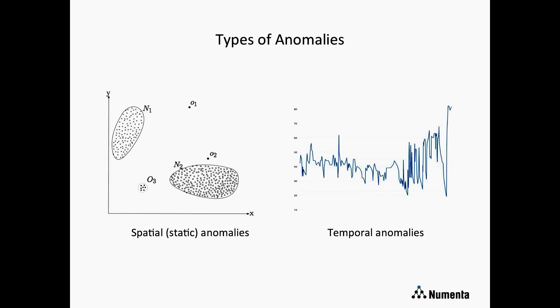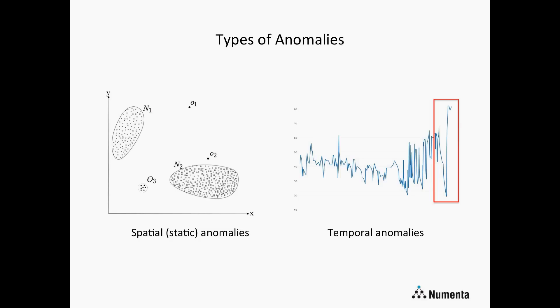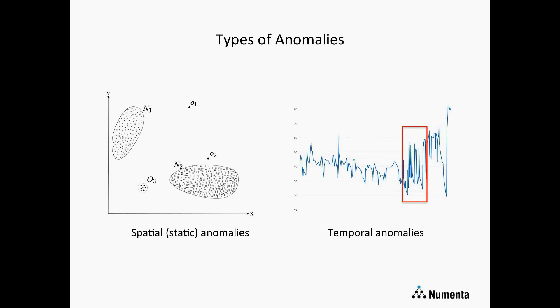There are also temporal anomalies — those are anomalies in which the value is unusual given the current temporal context. The sequence leading up to the value, or the pattern in which it's occurring, is what makes it anomalous, even if the value itself is something you see frequently in this data stream. In this example there's a period at the end where the value goes substantially outside the normal range, but there's also an earlier period where the values are typical for this data stream but the temporal patterns are unusual.